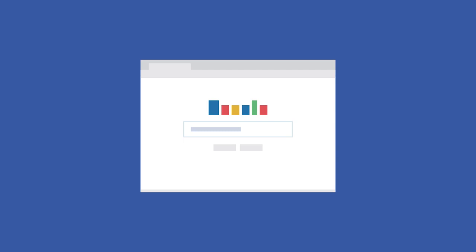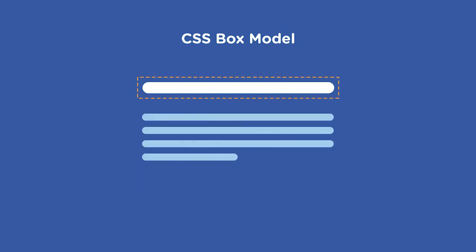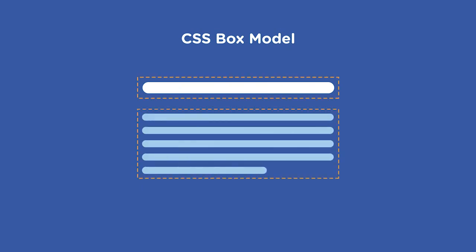Say your page contains a heading using the h1 element — that's a rectangular box. The paragraph of text beneath it, that's a rectangular box. And if those two elements are wrapped inside a div, well, that means your two smaller boxes are inside one larger box.